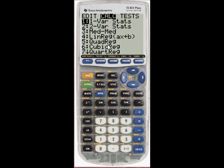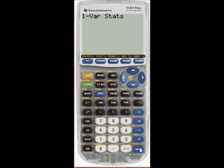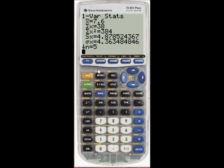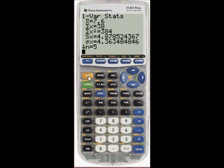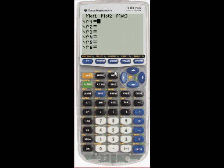And go back to stat. Calculate is right here in the middle. And I'll do one variable statistics. I have to select my list. My list is L1. So I press second. And L1 is right over the number one. And press enter. And here's our information. The first x bar is our mean. We have the sum of the data and the sum of the squares. The sample standard deviation. The population standard deviation. The number of elements. The min, the max, the quartiles, the median, and so forth.